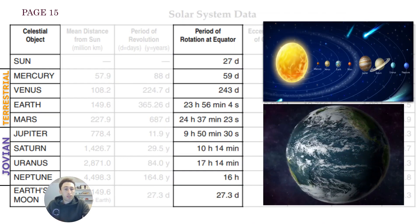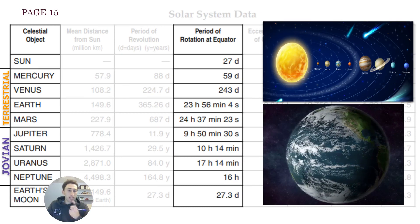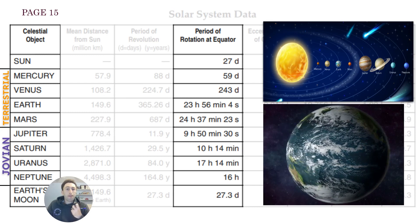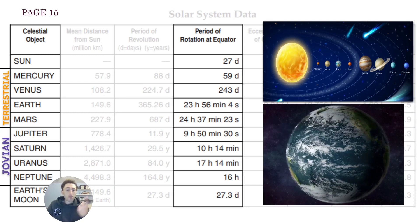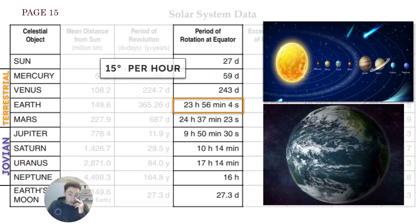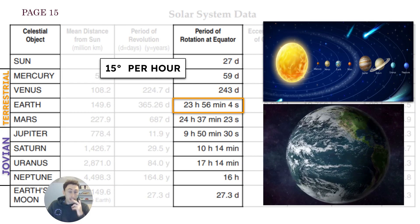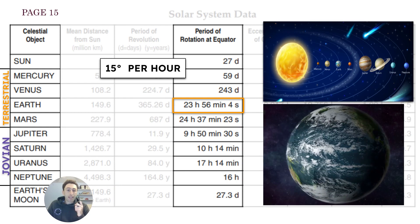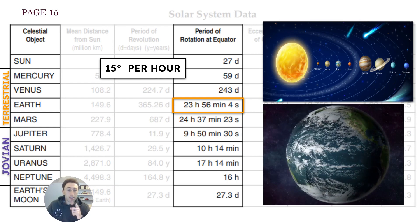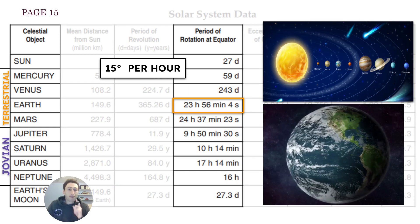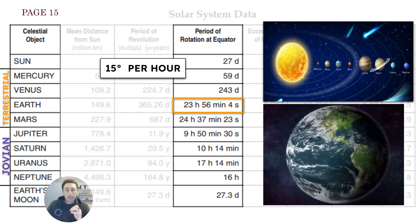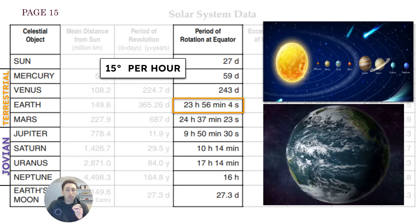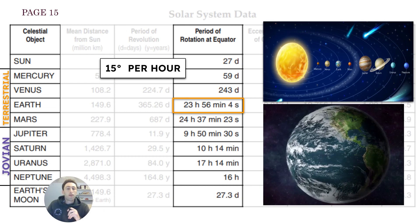The period of rotation is how long it takes the planet to make one full spin on its axis — that is called rotation. Revolution is moving around the sun in orbit; rotation is how long it takes the planet to spin on its axis. Earth takes about 24 hours to make one full rotation. If you do 360 degrees divided by 24, you get 15 degrees — therefore the Earth is rotating at a rate of 15 degrees per hour. So it's one degree per day for revolution and 15 degrees per hour for the rate of rotation.